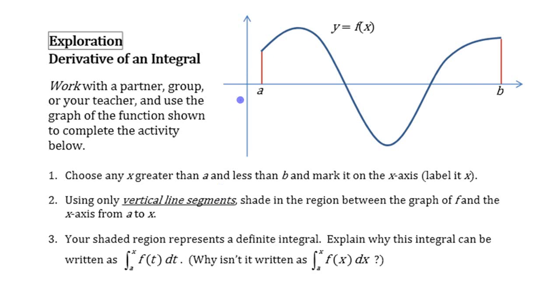So hopefully you've gotten the first part of this done - you've picked an x. Choose any x greater than a and less than b. A lot of people chose this, but it's better if you just pick something. If you don't want to do too much shading, pick one in here, but anybody could pick whatever they want.